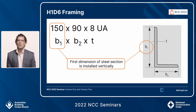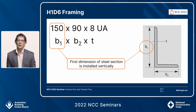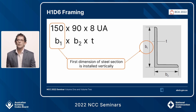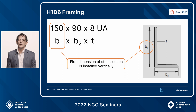One of the things the acceptable construction practice review required or desired to have clarified was reference to the first dimension of steel. It currently exists in 2019 but it's a bit vague in its application. So what we've done is set out some examples to say that the first dimension of steel to be installed vertically refers to the larger of the two dimensions of a particular steel member. In this case, a 150 by 90 by 8 unequal angle — the larger dimension of 150 is the first dimension of steel that needs to be installed vertically. We've clarified that the installation of the first dimension of steel vertically will always refer to the larger of the dimensions of a particular steel element.